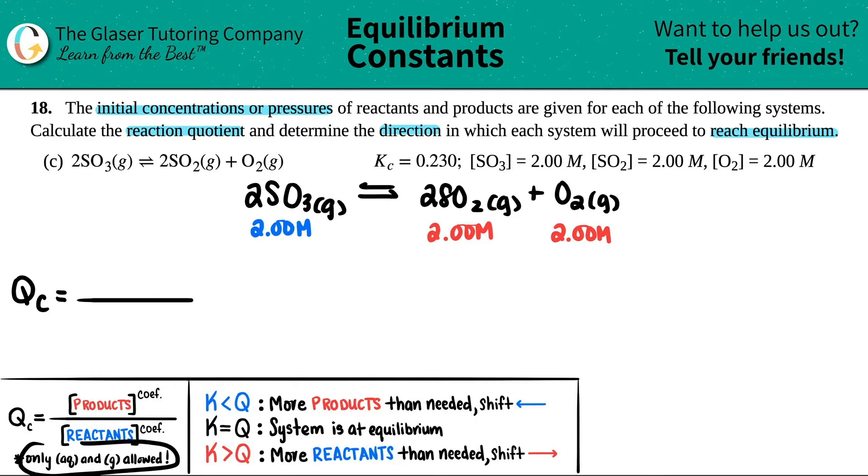So, let's start it out. QC equals. Now, before you even write your QC formula, just remember, got to play the game. Aqueous and gases are only allowed, so just check those states. But it seems like we're good. These look like they're all gases, so all of these are going to be included in the QC.